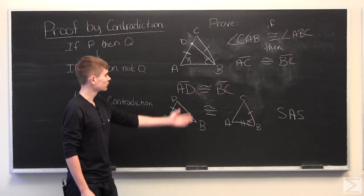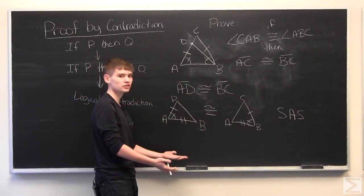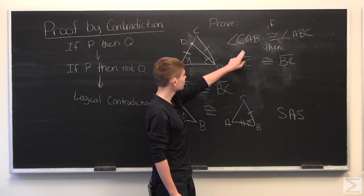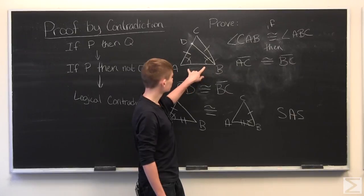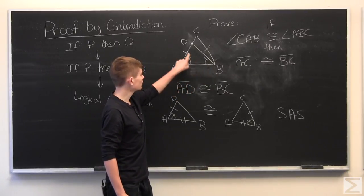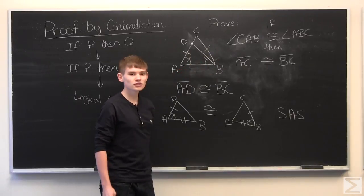Therefore, we've reached a contradiction. We have shown that if you have a triangle with two angles that are congruent, then the opposing sides are also congruent.